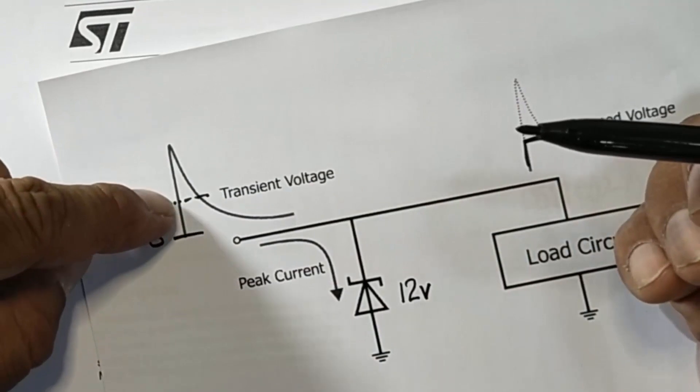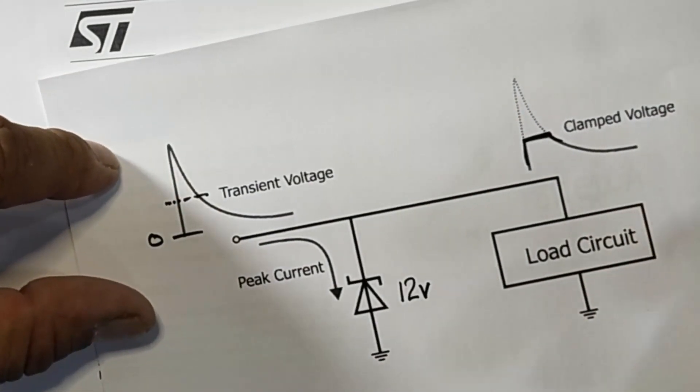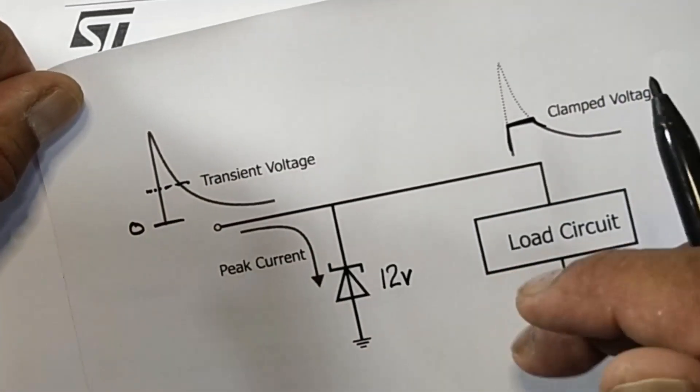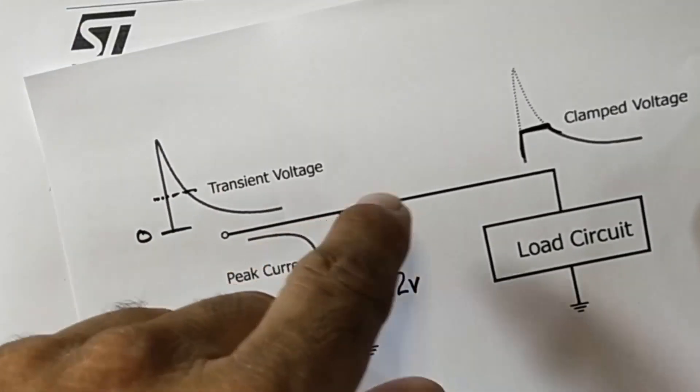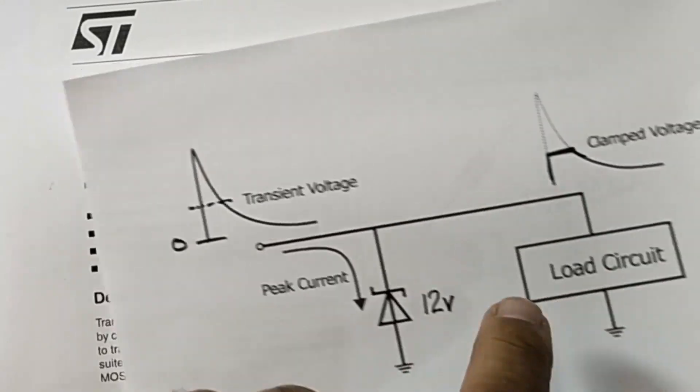It will clamp the upper peak when there is any lightning strike, any high voltage pulse due to any reason in the DC rail, in the DC line. So it will protect the next circuit.